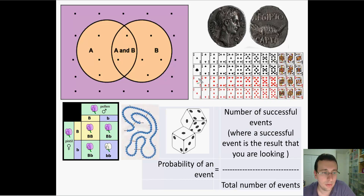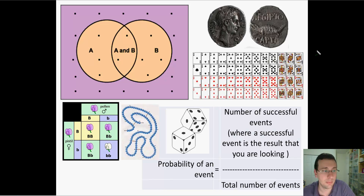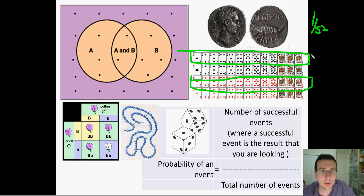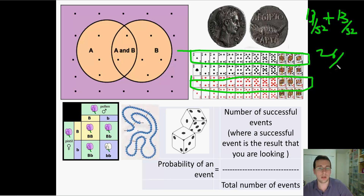What are the chances of drawing either a heart or a club from a deck? The chance of each individual card is one out of 52. Using the law of addition for all 13 clubs: 13 out of 52. Adding the 13 hearts: 13 out of 52. Together that gives 26 out of 52, which is a one-half chance.